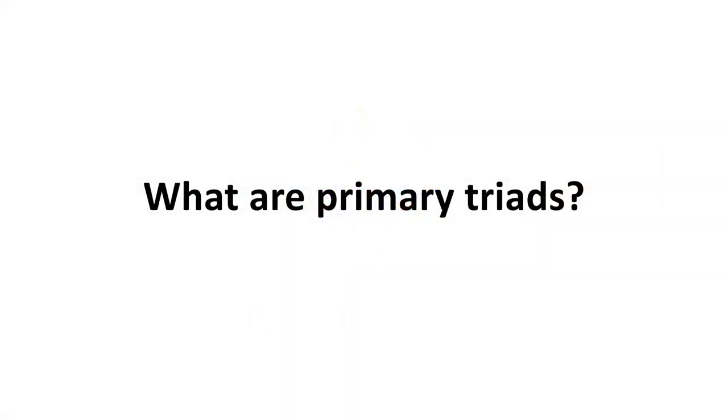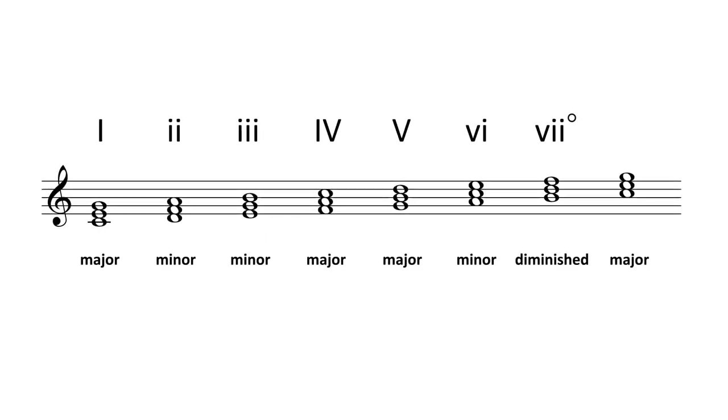What are primary triads? We can build seven different triads over each degree in a given major scale, but not all of these triads have the same level of importance.